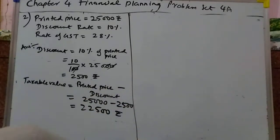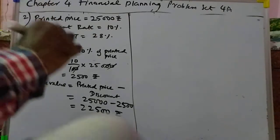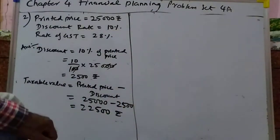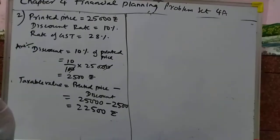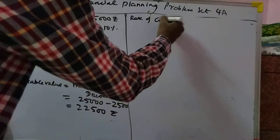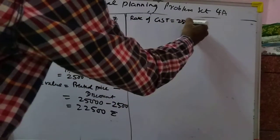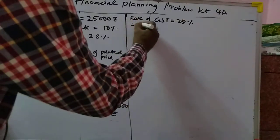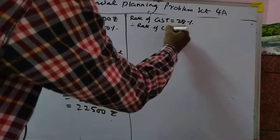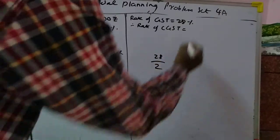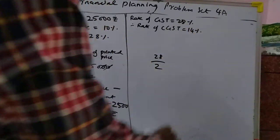Now calculate the taxable value: taxable value is equal to printed price minus discount, so that will be 25,000 minus 2,500, which gives 22,500 rupees. Now rate of GST is given as 28%, so CGST and SGST are each 28 divided by 2 = 14%.